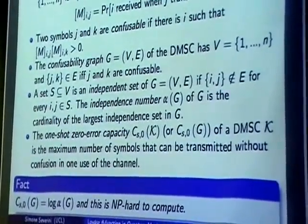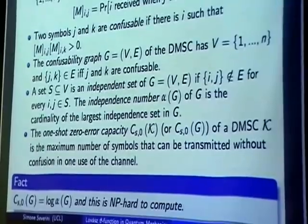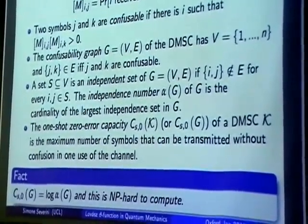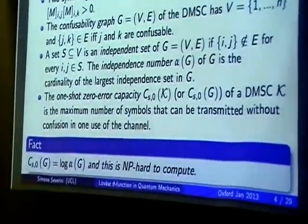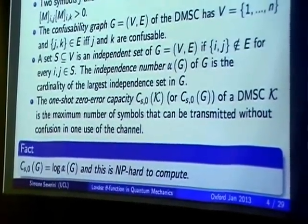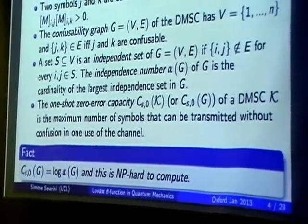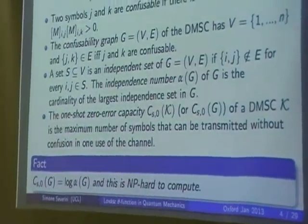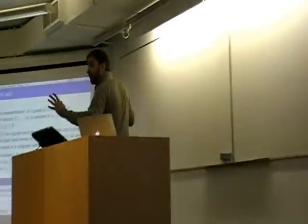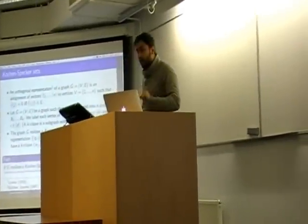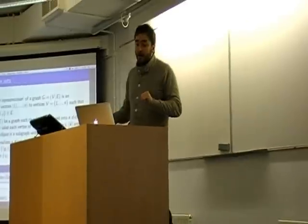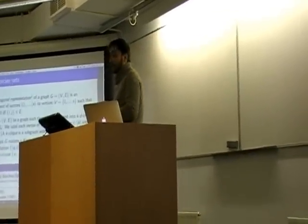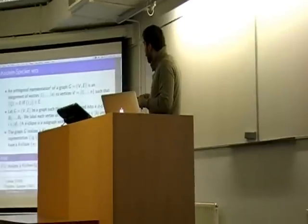Please let me know if you're happy with these definitions, and interrupt me anytime you have a question. Now I want to jump to something different and remind ourselves what Kochen-Specker sets are. I would like to define these through graph-theoretic machinery, namely orthogonal representations.